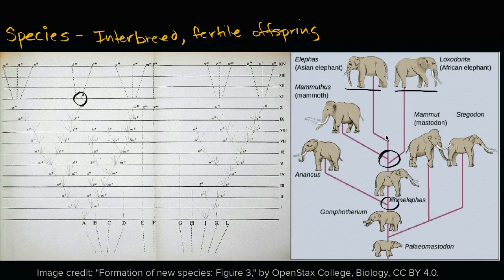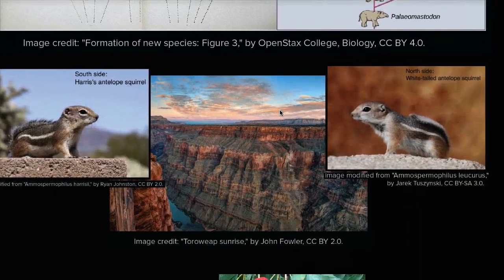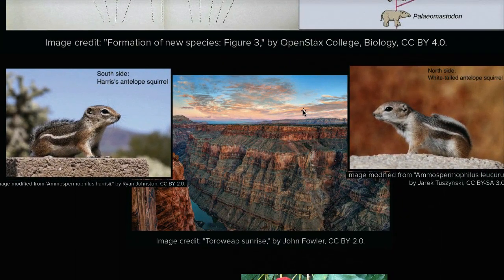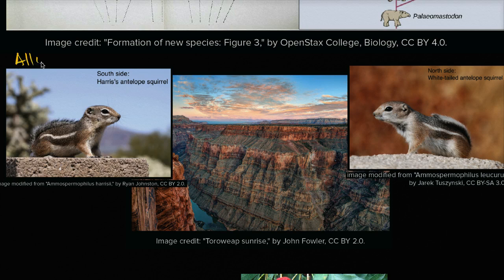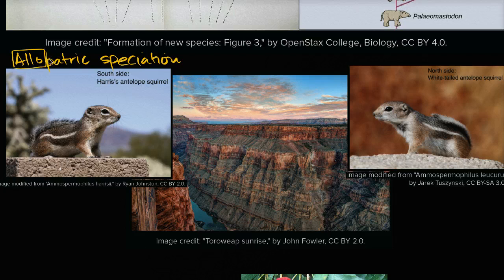How does the variation within a population, within a species, get so extreme and so separate that they can no longer interbreed and produce fertile offspring? The most intuitive way to imagine this happening is through geographic separation. The technical term for speciation — the formation of new species — due to geographic separation is allopatric speciation. 'Allo' comes from the word 'other' and 'patric' from the root meaning 'homeland,' so it's really talking about other geographies or geographic separation.